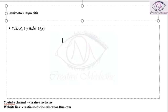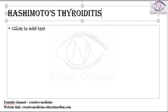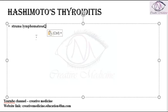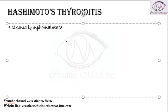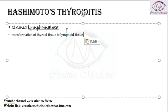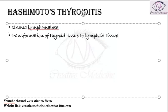Hashimoto's thyroiditis is also called Hashimoto's lymphomatosa — 'lymphomatosa' refers to lymphoid tissue. In Hashimoto's thyroiditis, the thyroid tissue gets converted into lymphoid tissue.